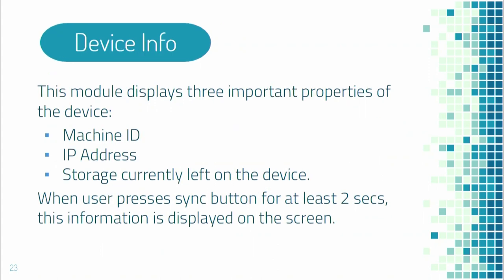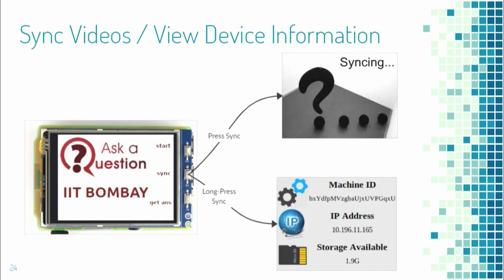The device info module displays three important properties of the device: the machine ID, IP address, and storage currently left on the device. When the user presses the sync button for at least 2 seconds, this information is displayed. You can press the sync button once to sync a video, or long press to see the device info.